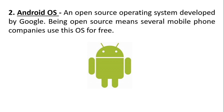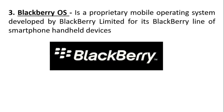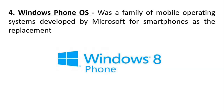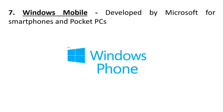2. Android OS — being open source means several mobile phone companies use this OS for free. 3. Blackberry OS is a proprietary mobile operating system developed by Blackberry Limited for its Blackberry line of smartphone handheld devices. 4. Windows Phone OS was a family of mobile operating systems developed by Microsoft for smartphones as a replacement. 5. Web OS — originally used for smartphones, now used for smart TVs. 6. Windows Mobile — developed by Microsoft for smartphones and pocket PCs.